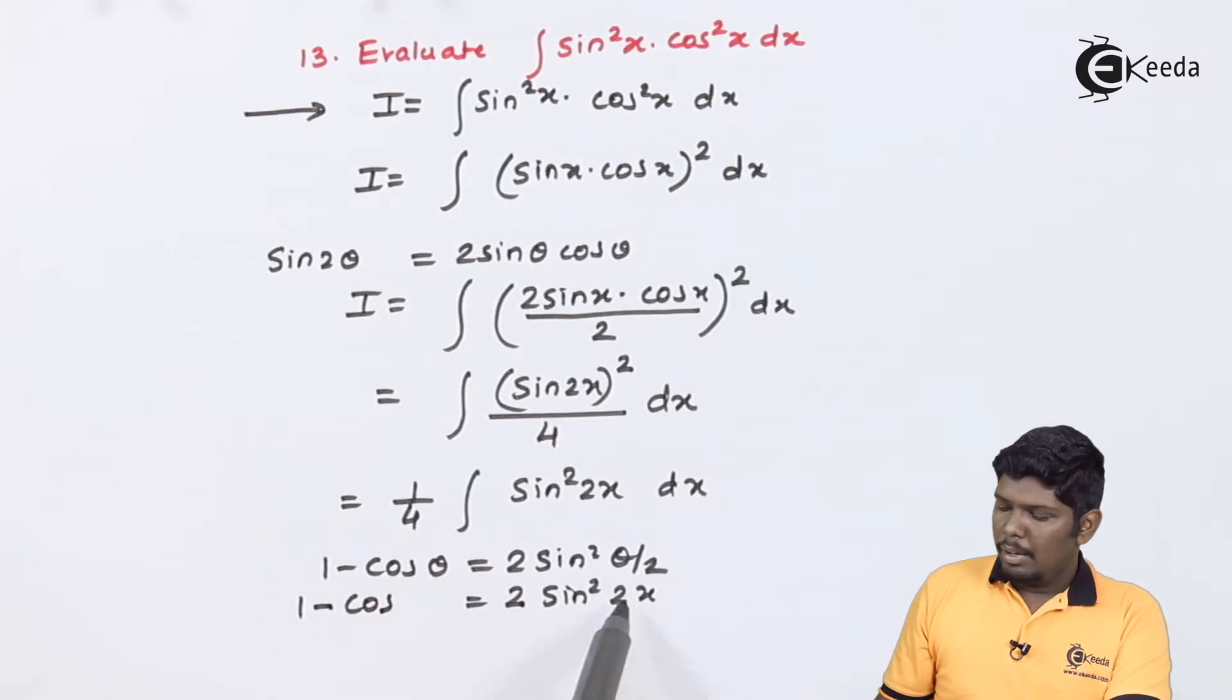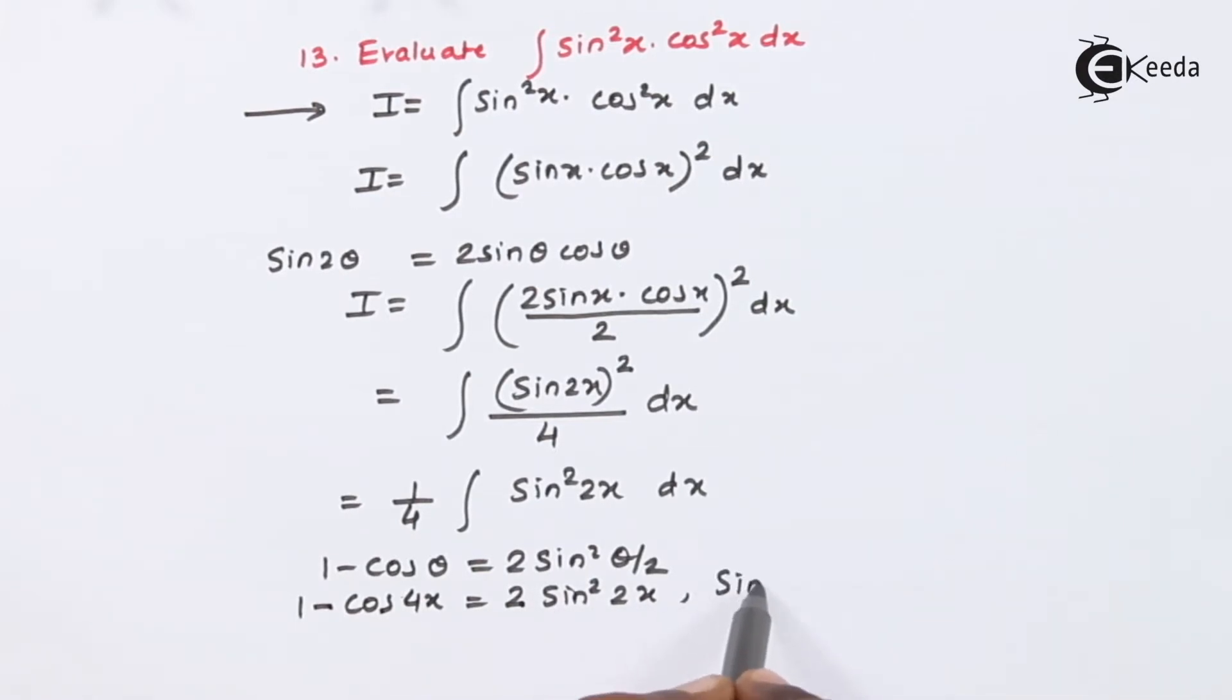Therefore, for 2x the double angle will be 4x. It means the value of sin²2x will be (1 - cos 4x)/2.